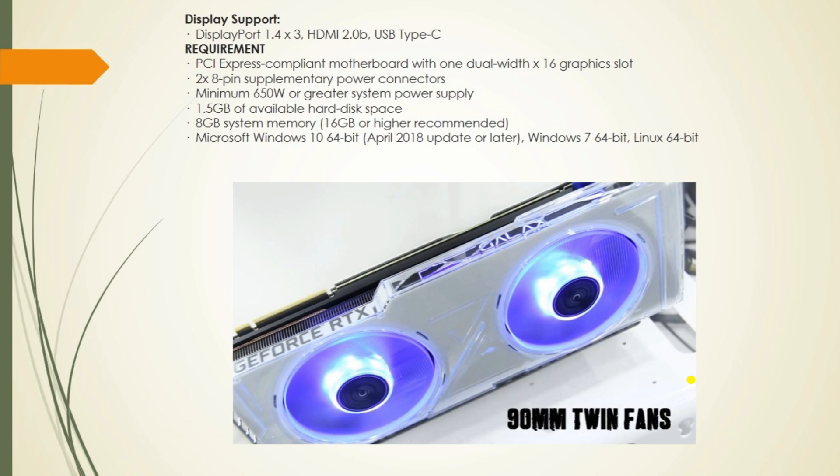1.5 GB available hard disk space is required for software installation. 8 GB system memory is the minimum, with 16 GB or higher recommended. Supported operating systems are Microsoft Windows 10 64-bit and April update or later, Windows 7 64-bit, and Linux 64-bit — only 64-bit OS is supported.